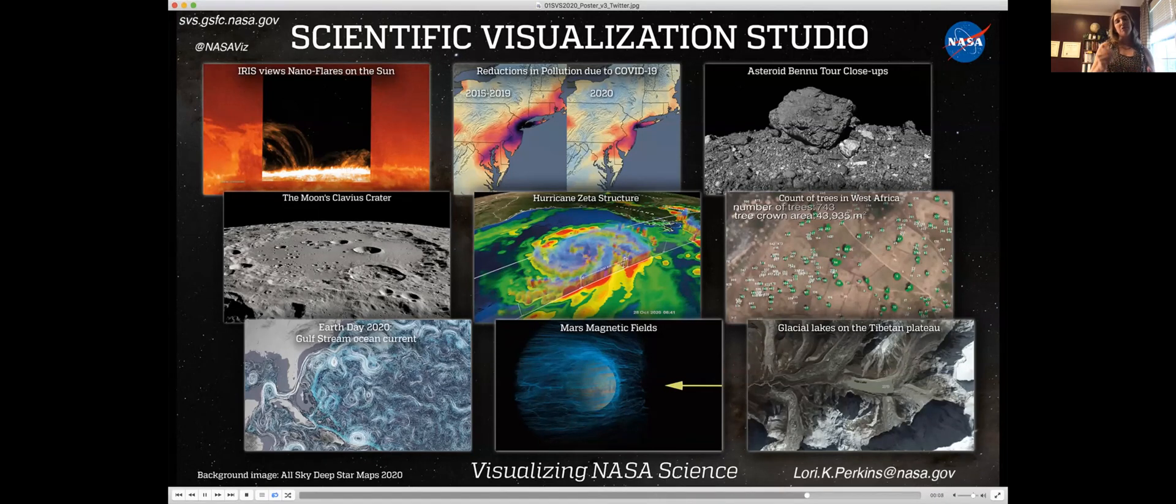The majority of our work comes in where a scientist will generate some kind of an academic paper, and then they'll ask us to visualize that. Here's just a couple of recent examples. This one up in the left-hand corner is the iris nanoflares, a really exciting discovery with our heliophysics group showing why is it that the corona of the sun is so much hotter than the surface of the sun.